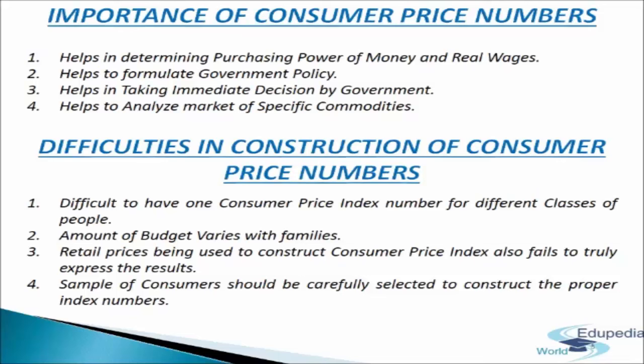It helps to formulate government policy. For example, when the consumer price index increases beyond a certain level, the government decides to compensate workers by paying additional money, i.e., dearness allowances (DA). The government and business units use consumer price index numbers to regulate DA or grant bonuses to employees in order to compensate them for increased cost of living due to price rise.